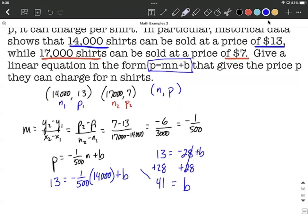Putting that back with the information we've already had, we can come up with our final equation. It's going to be P equals negative 1 over 500 times N plus 41.